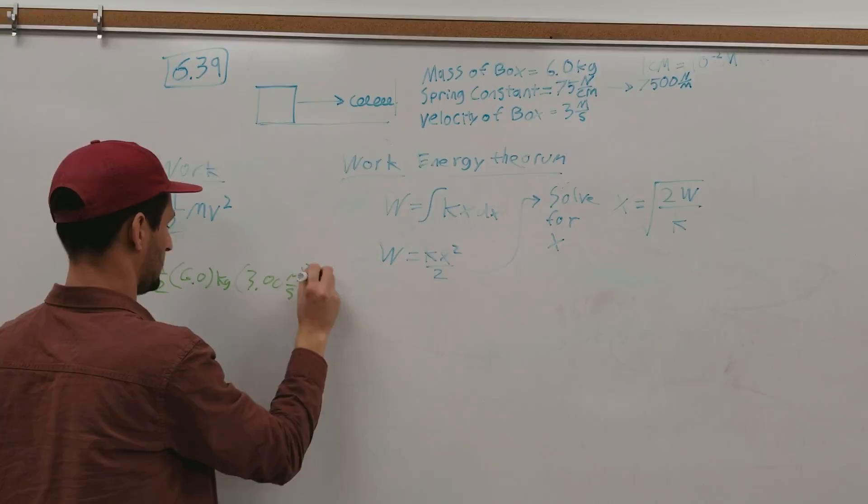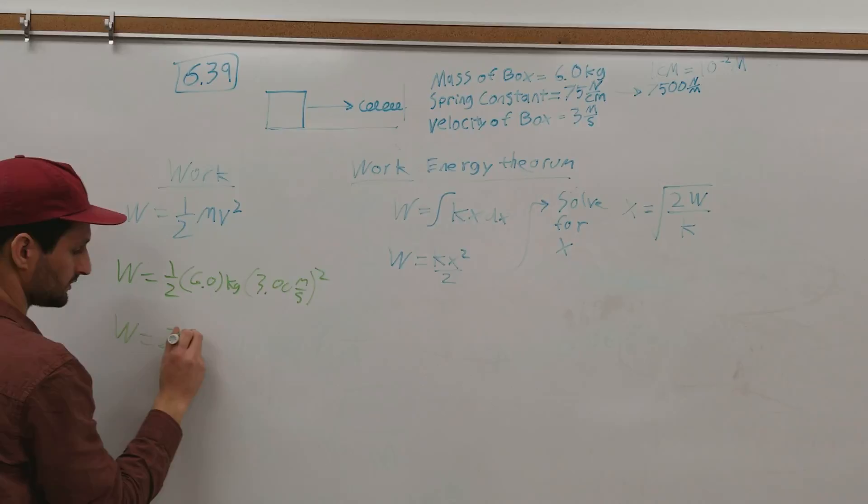So when you multiply all this out, you get work equals 27 joules. And a joule is meters squared second squared times kilograms.